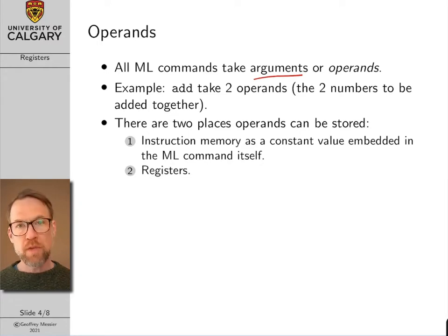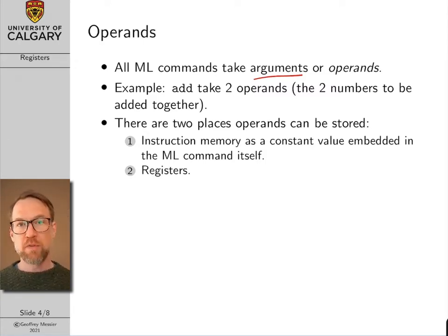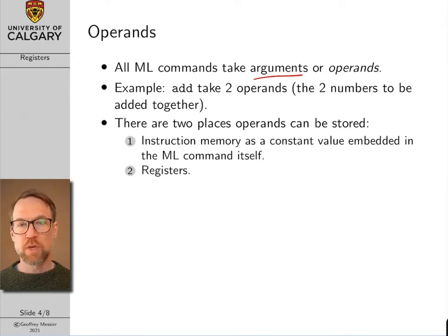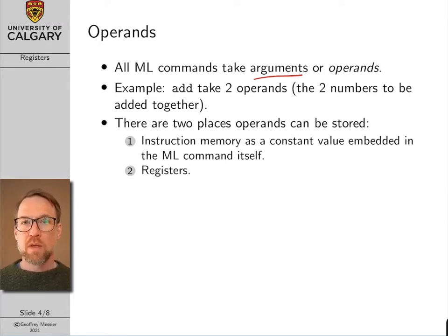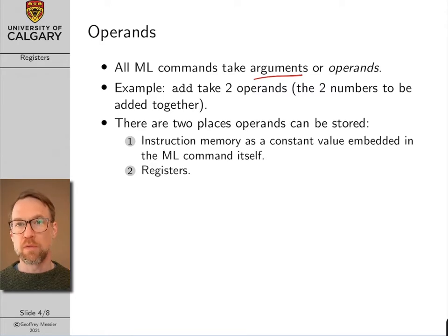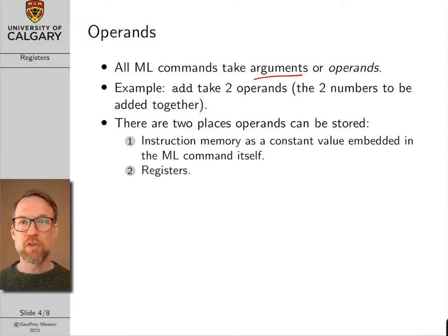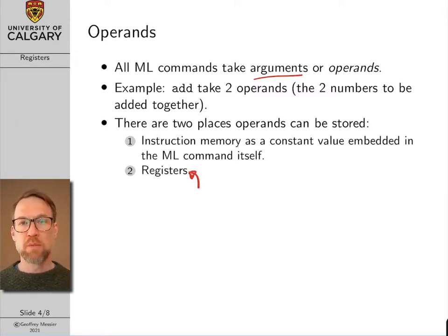There are basically two places where these numbers can be stored. The first is embedded in the machine language instruction itself — we refer to that as an immediate. That works when we want to add a constant, for example when looping and incrementing an index by one. However, often we want to add variable values that might change during execution, and in that case those operands are typically stored in the registers inside the register file.